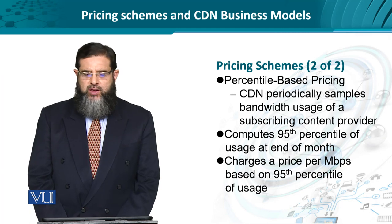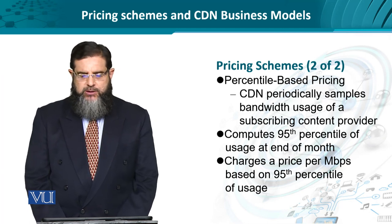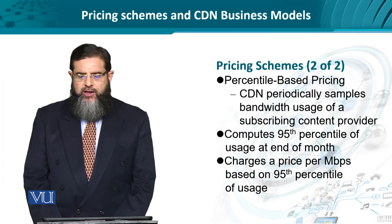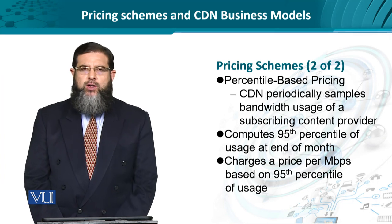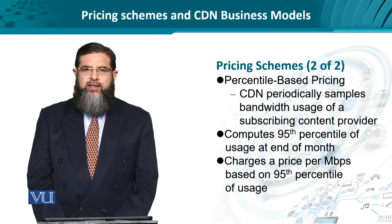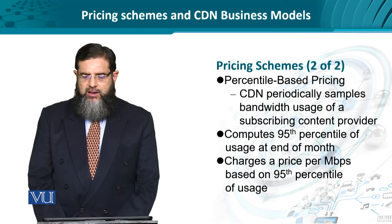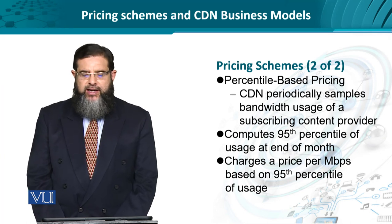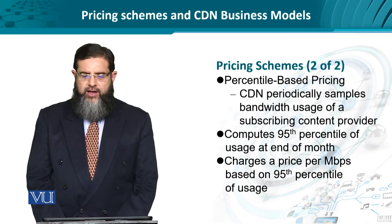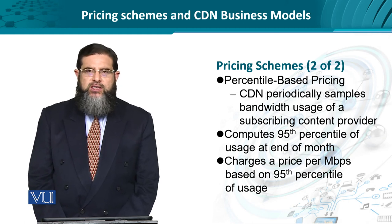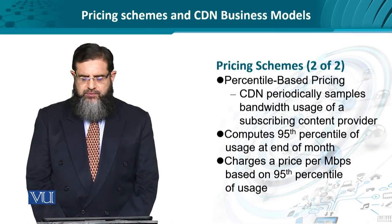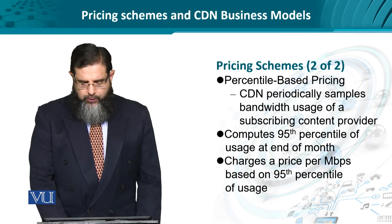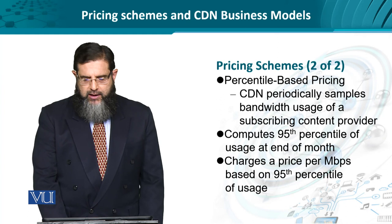Another form of pricing is percentile-based pricing, specifically in terms of bandwidth consumption. The CDN periodically samples bandwidth usage using well-known tools like MRTG. The content provider's consumption of bandwidth is measured, and then to make it more fair, the 95th percentile of usage is computed at the end of every month. Correspondingly, the content provider is charged per megabits per second.